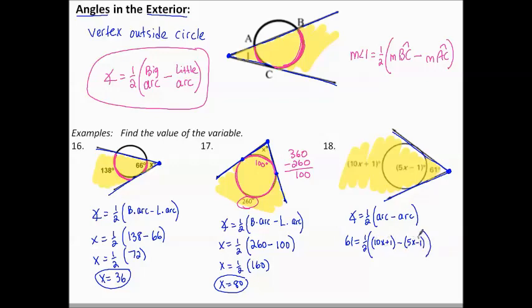We've got to combine these like terms first. So 61 equals half, 10X minus 5X is 5X, and 1 minus a negative 1 makes 2. I can get rid of that half now by multiplying by 2. And then solving the rest. Subtracting 2 makes 120, and 120 divided by 5 makes 24. Yay!